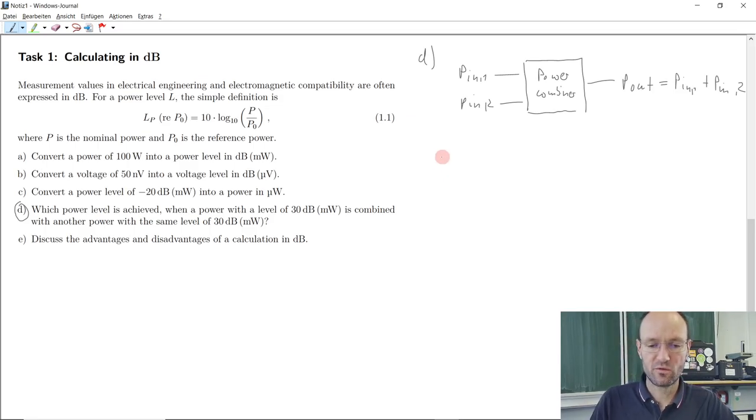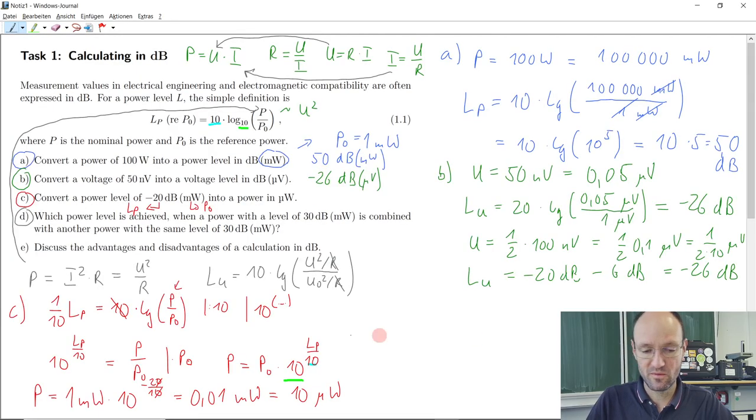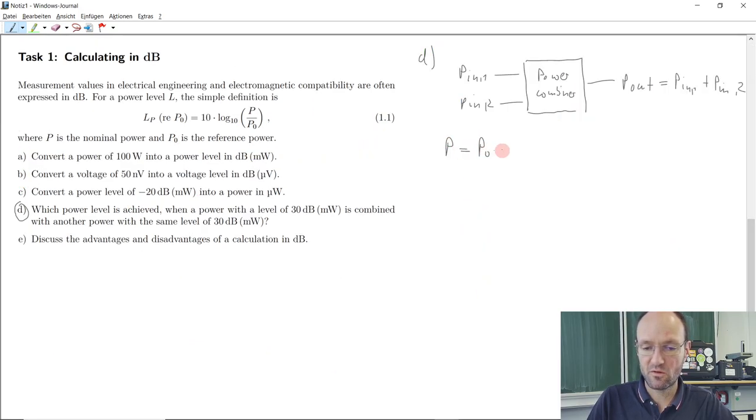The first step would be we convert this into linear scale. Luckily we just learned how to do it and the formula is, remember, is still here. So we use this formula once again. So power is reference power multiplied with 10 to the power level divided by 10. And the reference power in this case is 1 milliwatt and the power level is 30 dBm. So we have this multiplied with 10 to the power of 30 divided by 10. So the zeros will cancel each other. We have 10 to the power of 3 and milliwatt is 10 to the power of minus 3. So this and this will also cancel each other and at the end we get 1 watt.